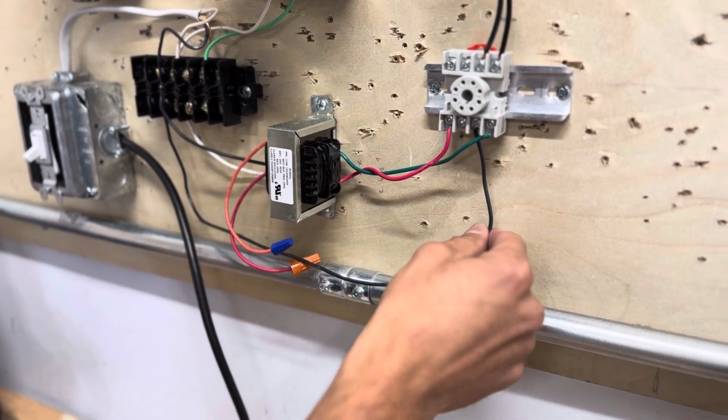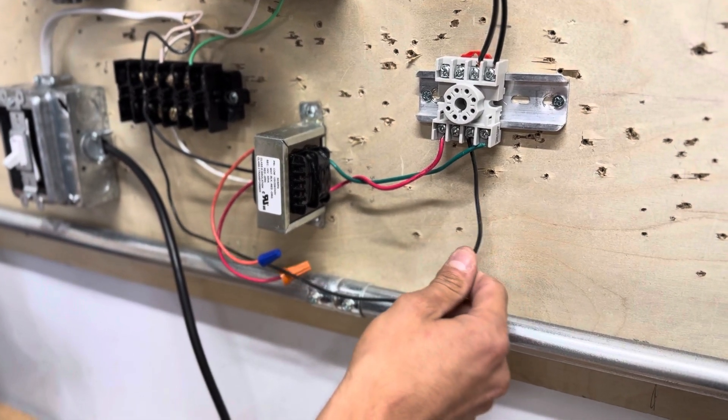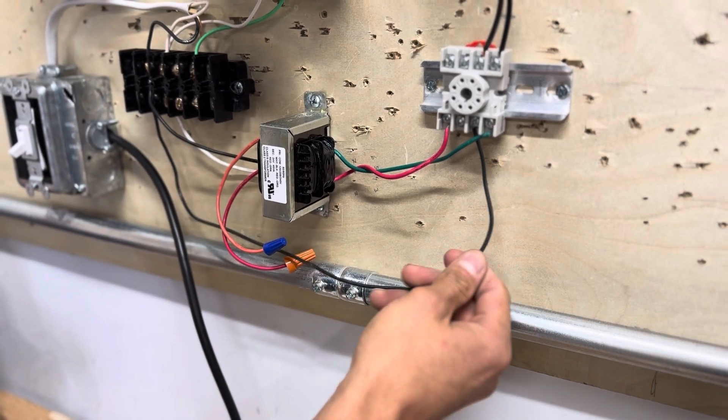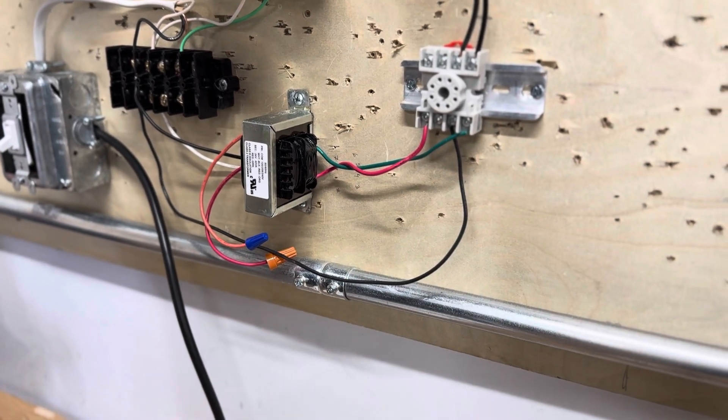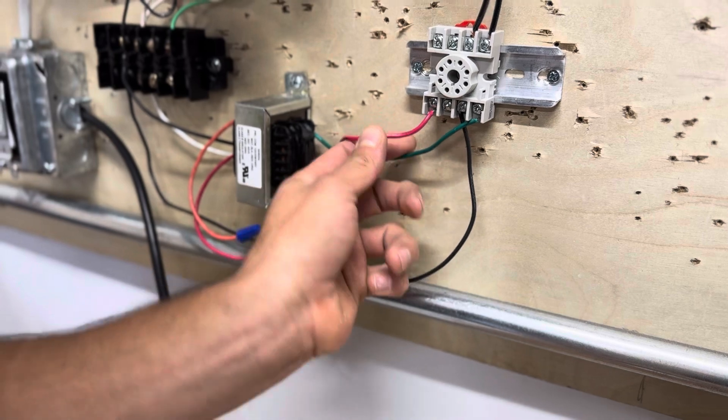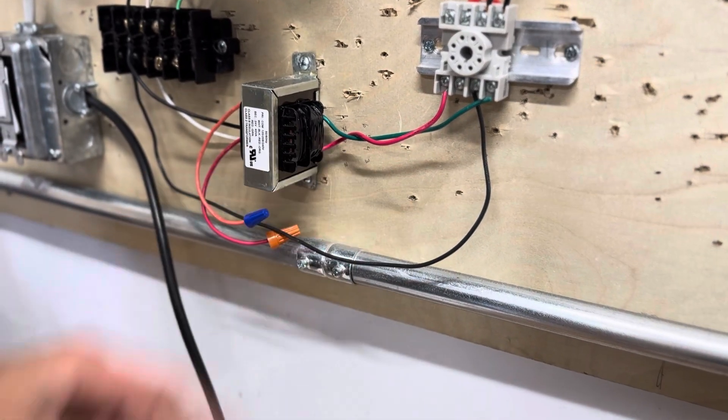Now we have a common right here where we're going to supply voltage. This is your constant 120 volt AC source. Now the coil is energized with 24 volts. Now where does that 24 volts come from?